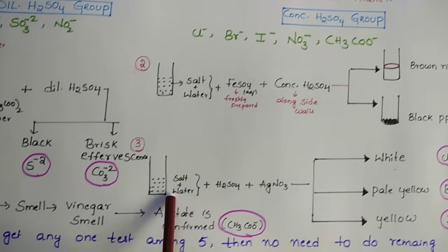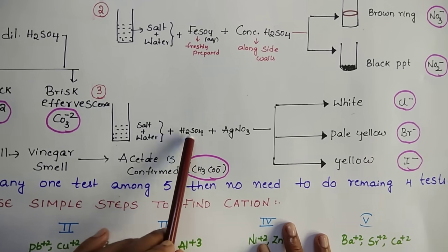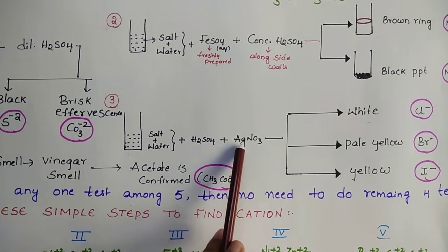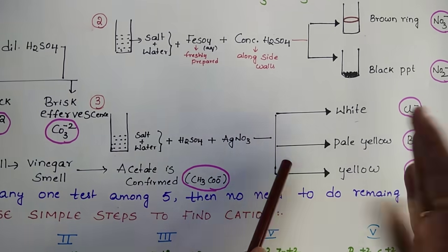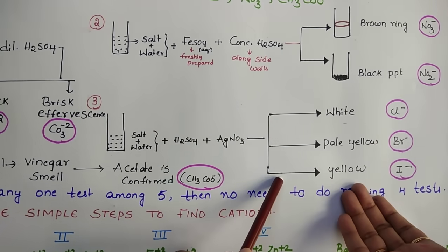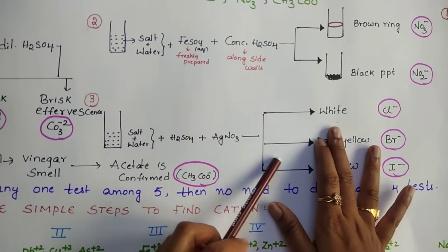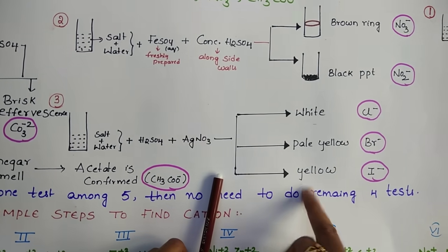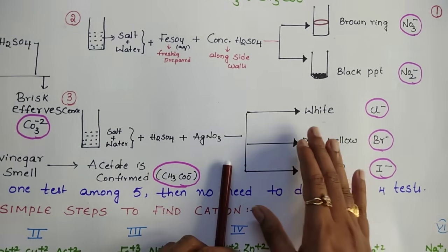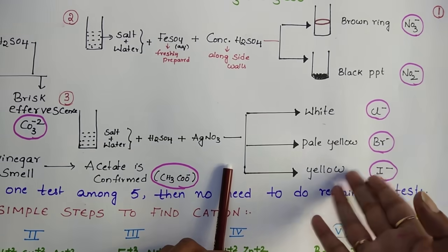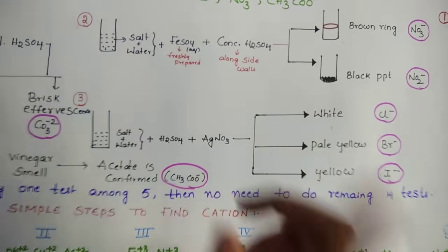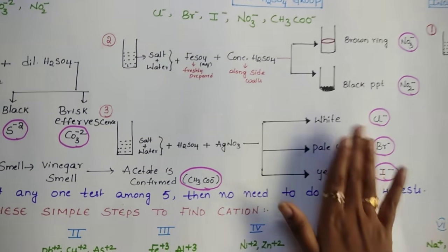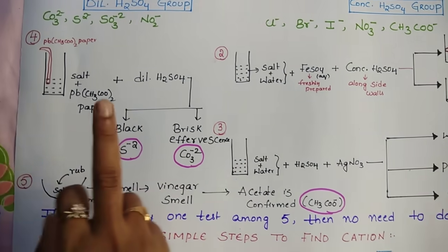For test three, take salt and water, add concentrated H₂SO₄, and then add AgNO₃ solution — two to three drops. You may observe three things: white precipitate indicates Cl⁻ (chloride); pale yellow precipitate indicates Br⁻ (bromide); yellow precipitate indicates I⁻ (iodide). By using these colors you can easily identify these three anions. If you observe no color — neither yellow nor white — then proceed to test four.